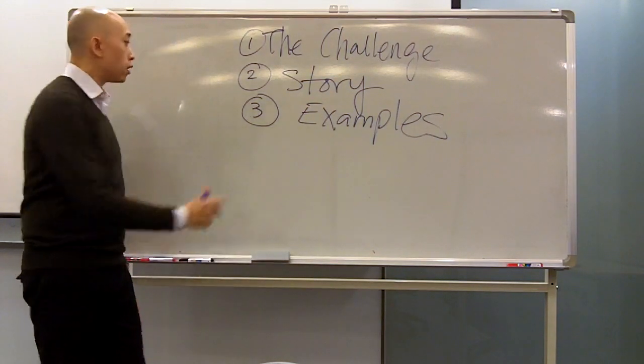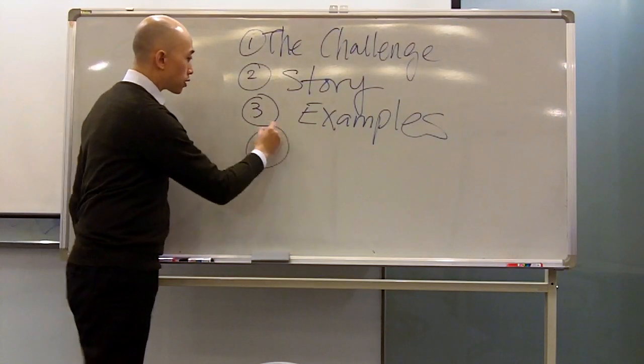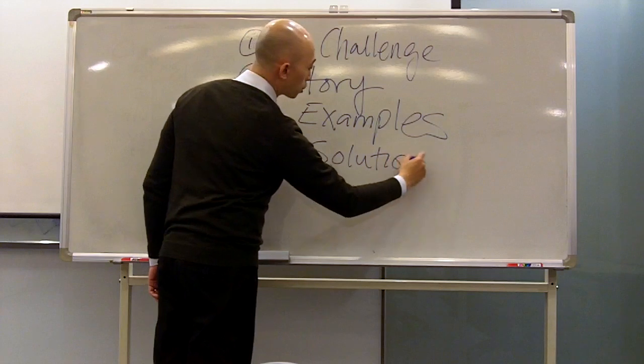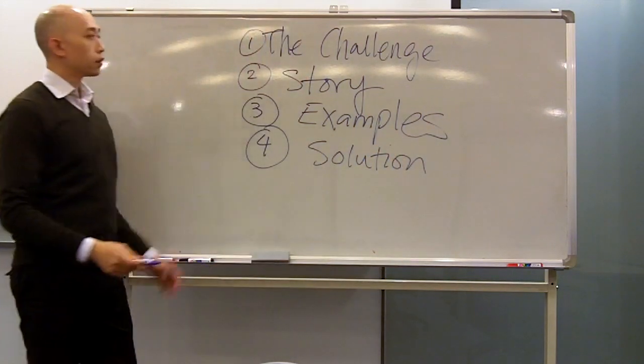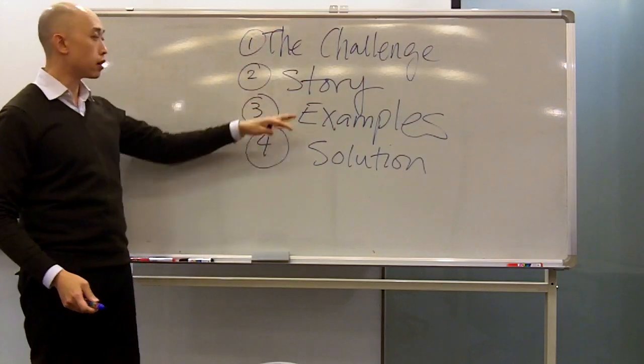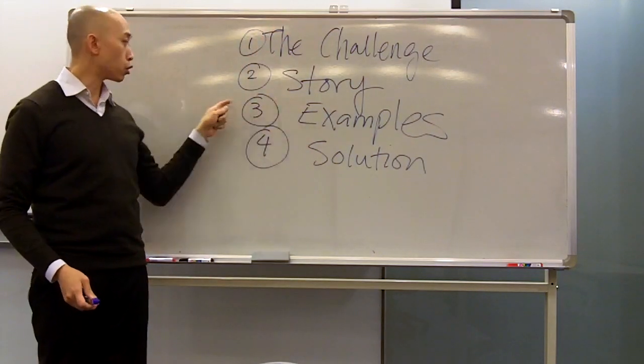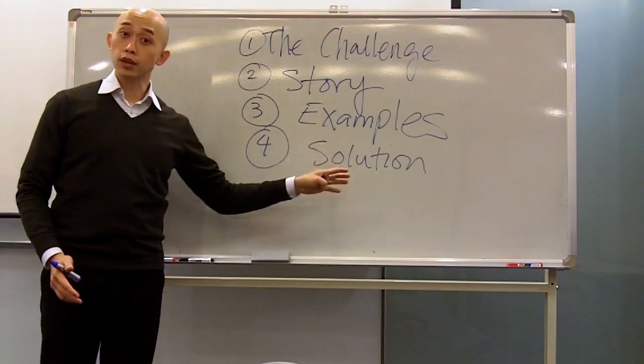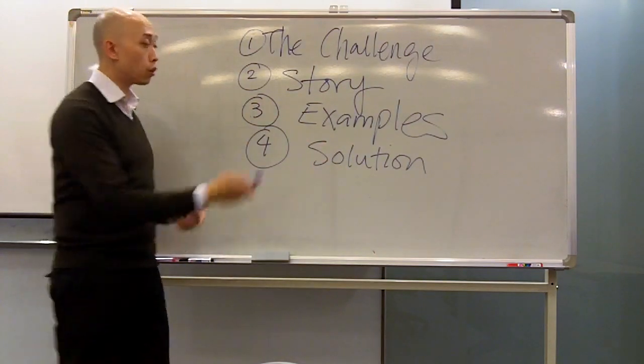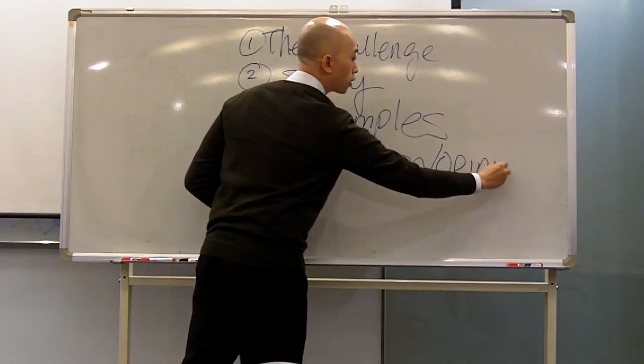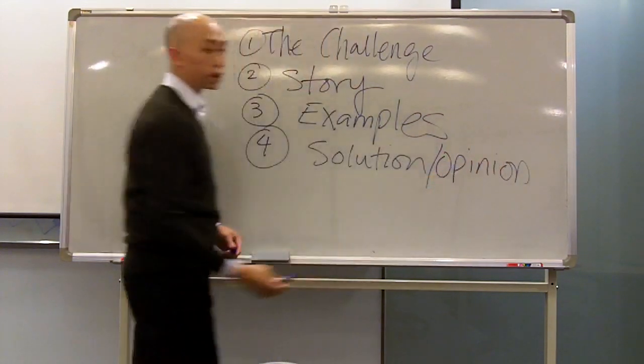And then what you want to do then, is you want to offer, sorry, it's going to be four things, I guess, is some kind of a solution. This really can go together. Your challenge and the story can go together. So really, you could say, examples and solution could be number two and number three, if you wanted to say it that way. But you want to offer a solution now. What do you think is your solution, or what do you think is just your real opinion about what can be done?